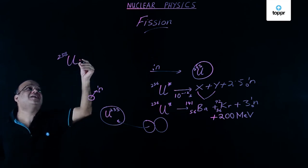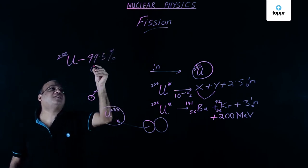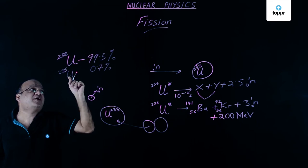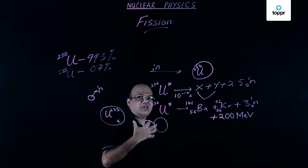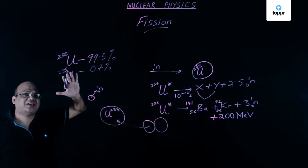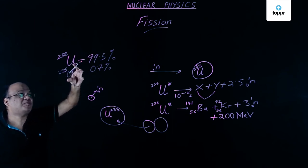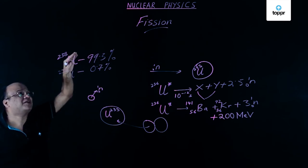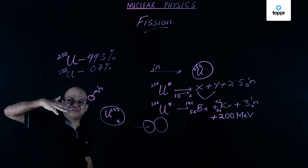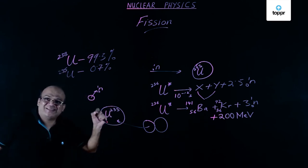Remember, in nature 99.3% of uranium is U-238 and only 0.7% is U-235. U-235 fissions with slow neutrons; U-238 fissions with fast neutrons. For an atom bomb you need U-235, but separation of these two isotopes is not easy because chemically you cannot separate them — they have the same chemical properties — so physical techniques must be used.